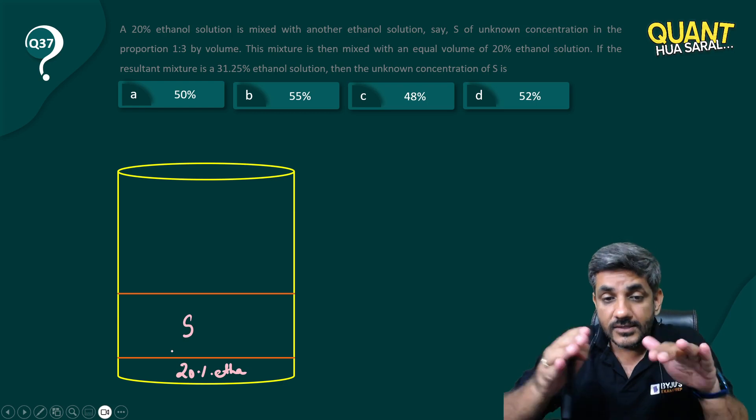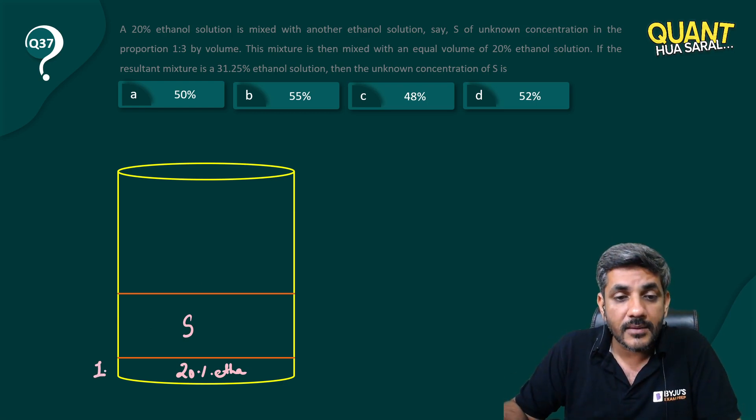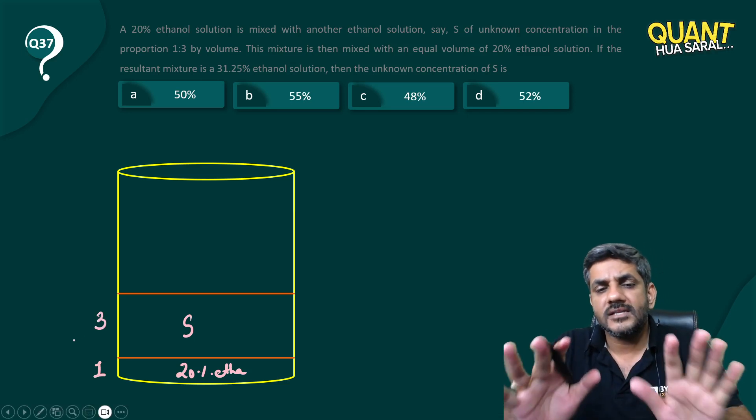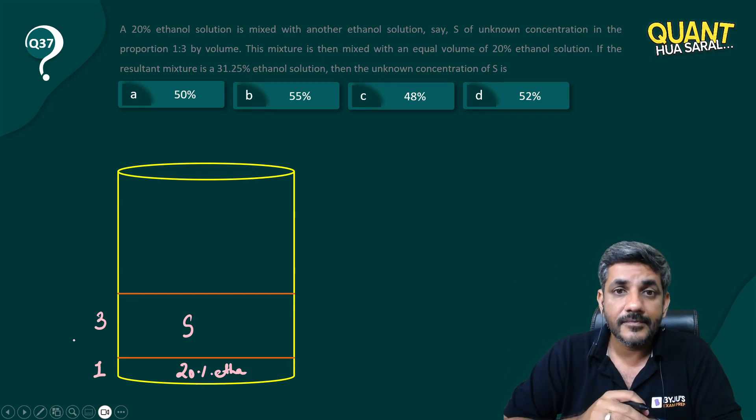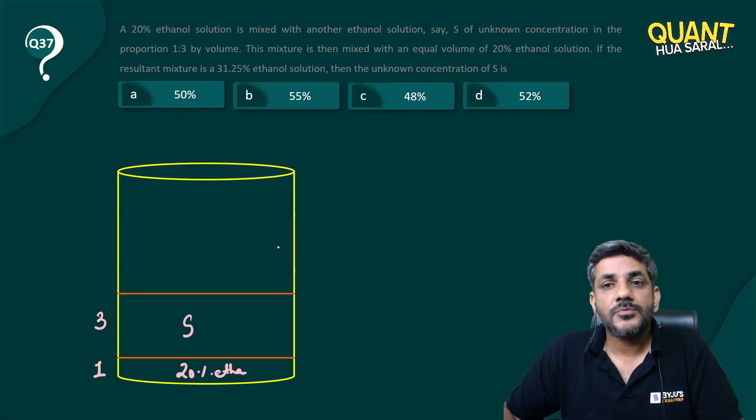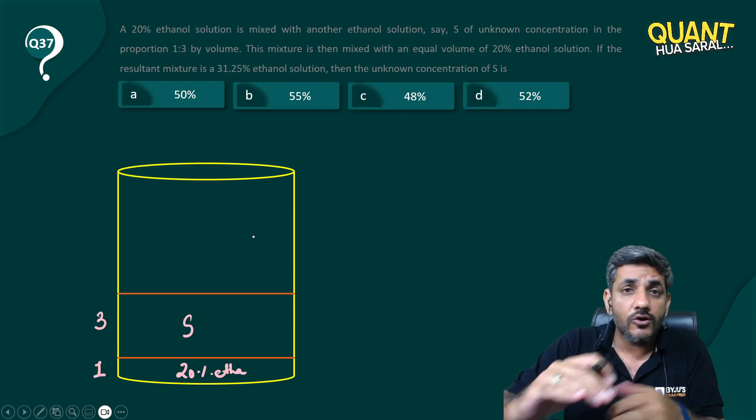We do not know the percentage in this part, but this is equal to three parts. Together they are equal to four parts. This mixture is then mixed with an equal volume of 20% ethanol solution. Equal volume means the current volume is four, so another four is being added with 20% ethanol.